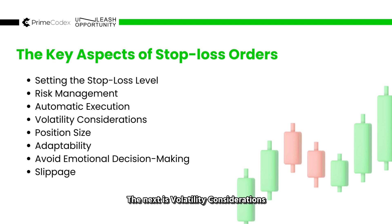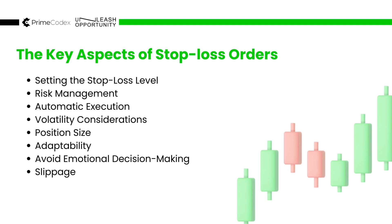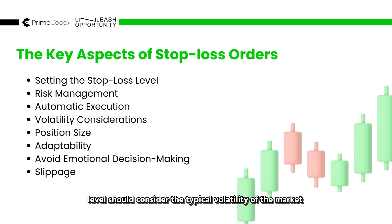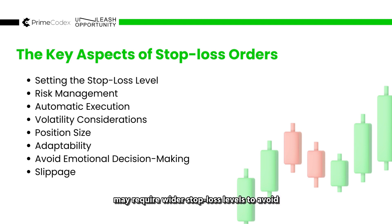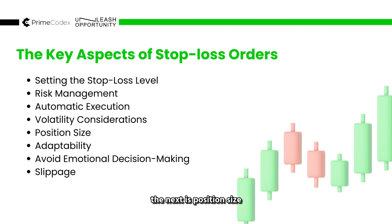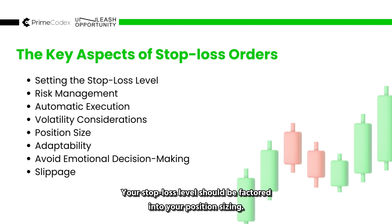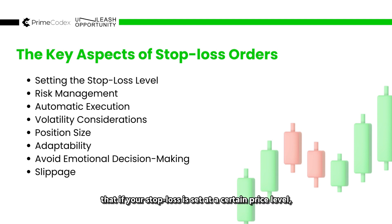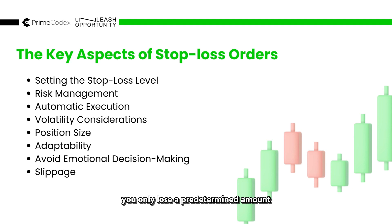The next is volatility considerations. The distance between your entry point and your stop loss level should consider the typical volatility of the market you are trading. More volatile markets may require wider stop loss levels to avoid being prematurely triggered by normal price fluctuations. The next is position size. Your stop loss level should be factored into your position sizing, so that if the stop loss is hit, you only lose a predetermined amount of trading capital based on your risk tolerance.